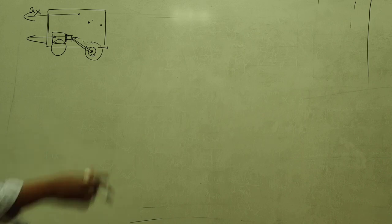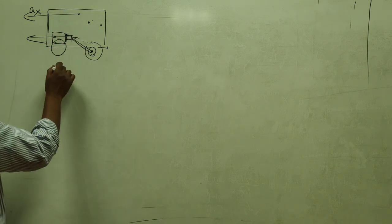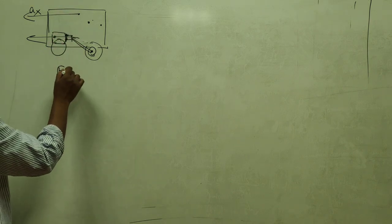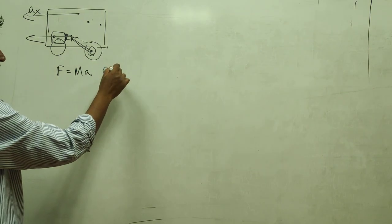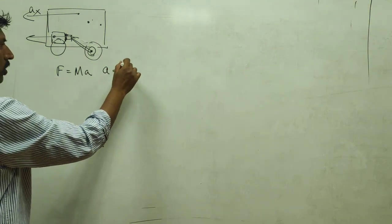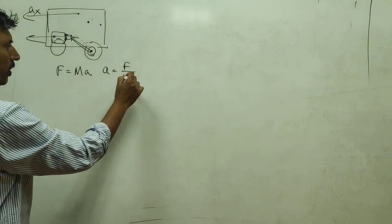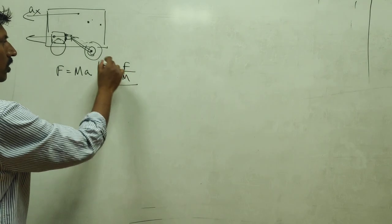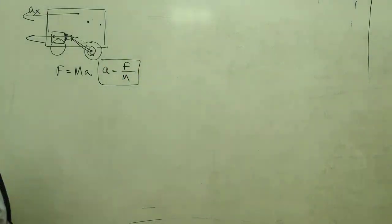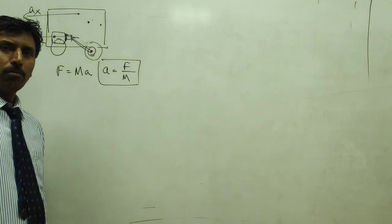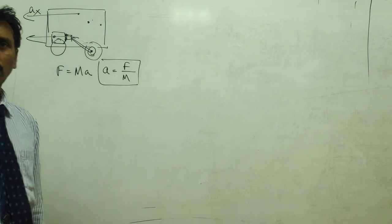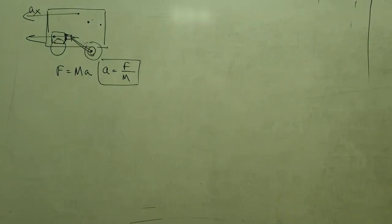It is the reason why we use the equation F = MA, and we can say A = F/M. Higher the force, more the acceleration; higher the mass, lower the acceleration. Along with this, we have one more resistance to consider.